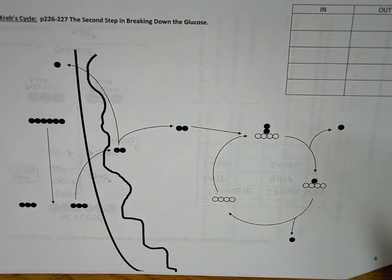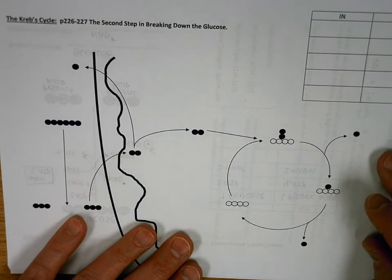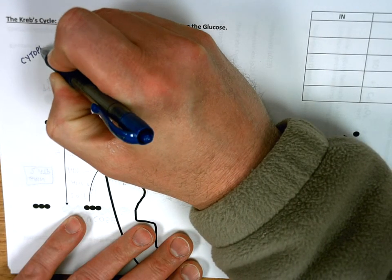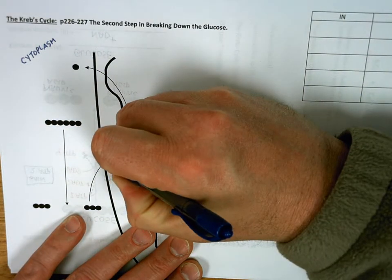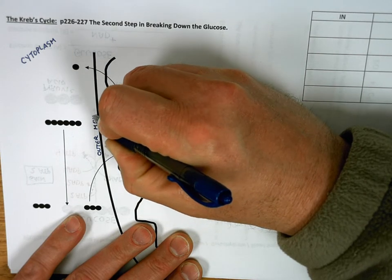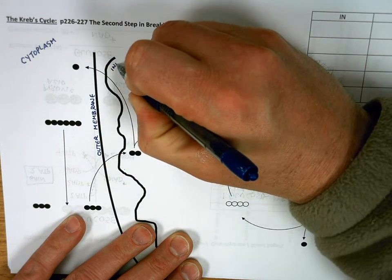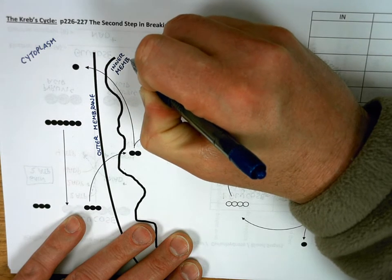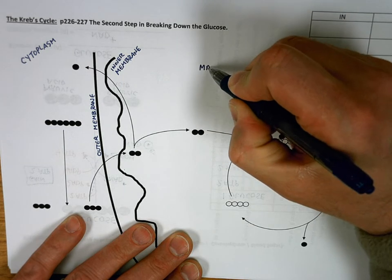We should start by reviewing glycolysis. Let's look at the different parts of this diagram. Out here is the cytoplasm of the cell. This is the outer membrane of the mitochondria. This is the inner membrane of the mitochondria, the squiggly one. And then this is the very inside of the mitochondria, which we call the matrix.